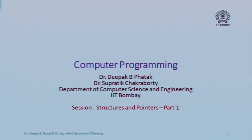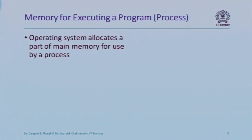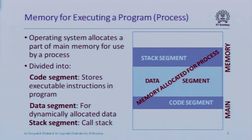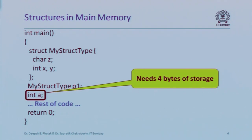This is about structures and pointers. Every location of memory has an address and stores one byte. Every program that runs is allocated a chunk of memory divided into stack segment, data segment, and code segment. Here I have a simple program with a structure 'my struct type' having a character member and two integer members. I've declared two local variables p1 and a — p1 is of type my struct type, and a is an integer. Since both are local variables, space will be allocated in the stack segment. For a, we allocate four bytes since an integer requires 32 bits.